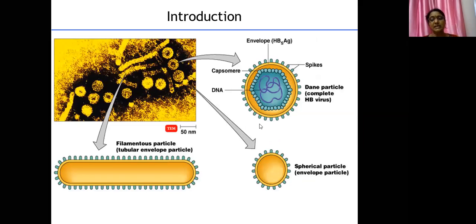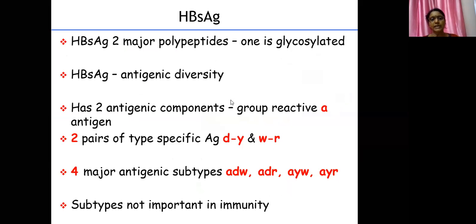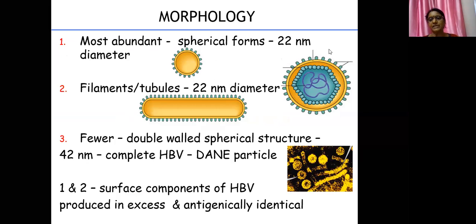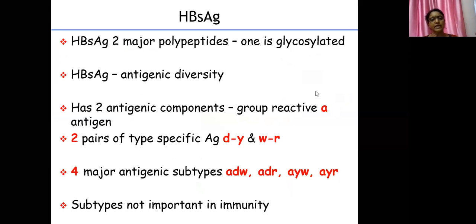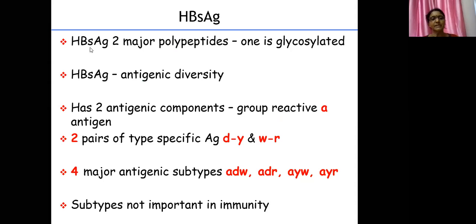The outermost protein — the hepatitis B surface antigen or HBsAg — is the envelope. It is made up of two major polypeptides, one of which is glycosylated, meaning it is linked to a carbohydrate. HBsAg shows a lot of antigenic diversity — hepatitis B viruses isolated from different patients around the world are not all the same. However, all of them share a specific group-reactive antigen known as 'a' (lowercase).